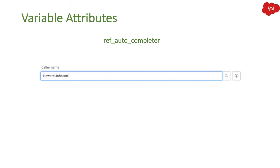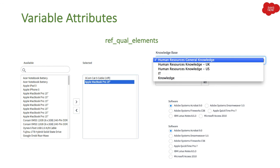The next variable attribute is ref_auto_completer, also applicable for reference fields. If you want to specify the name of a JavaScript class, you can utilize this attribute. There are different valid classes which you can use for this particular attribute.